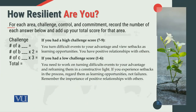For example, for each area — challenge, control and commitment — record the number, each answer below and add up your total score for that area. Humne challenge ka part attempt kiya; us challenge ke part mein aapke kitne A's thay, kitne B's thay, kitne C's thay.